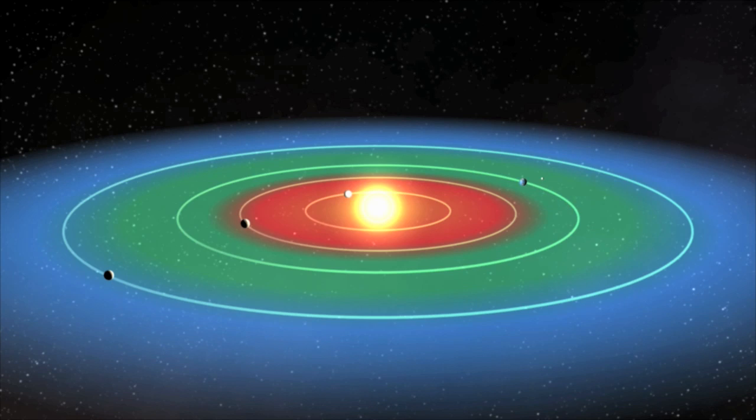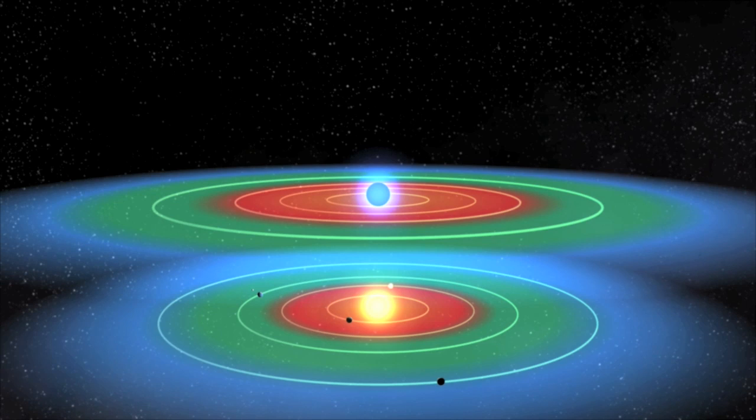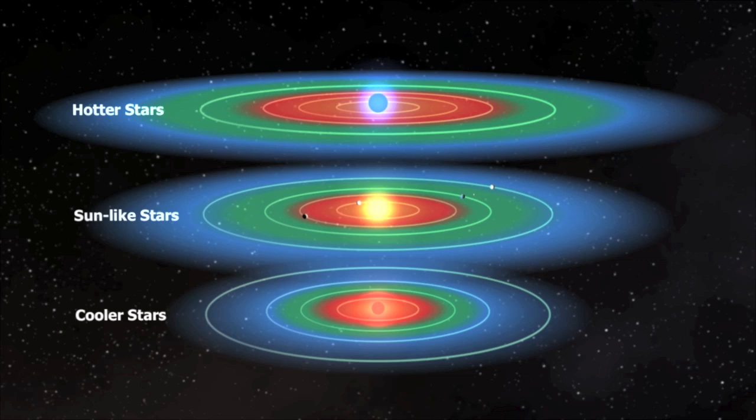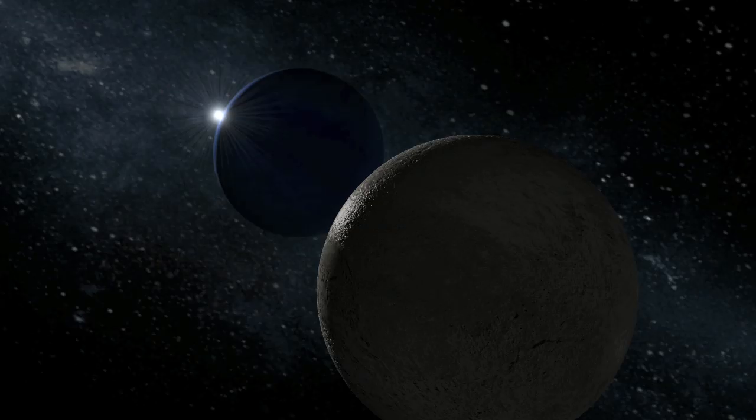Many question why, in our search for life elsewhere in the cosmos, we limit our search to Earth-sized planets within this so-called habitable zone. Surely we can't predict what may be possible in a galaxy with over 100 billion stars. Why would we limit ourselves so severely?